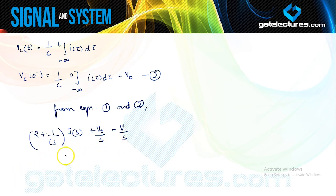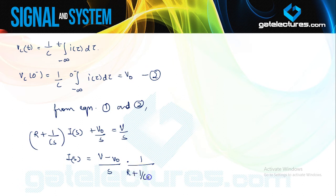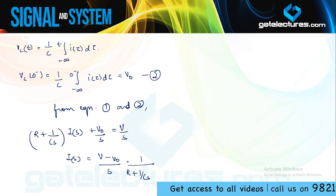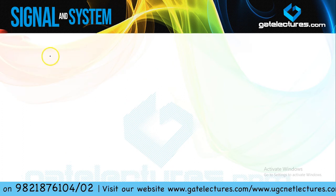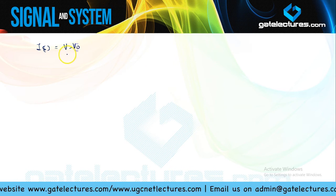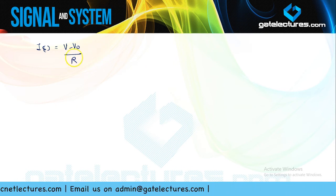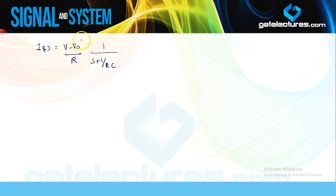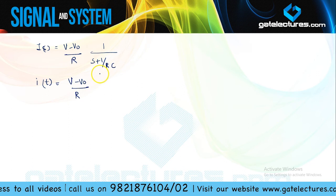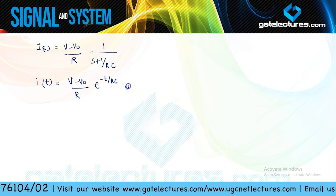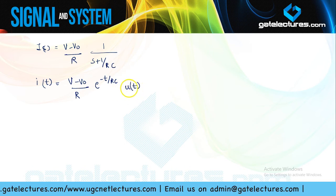Solving for I(s): I(s) = (V − V₀) / [s·(R + 1/(Cs))], which simplifies to I(s) = (V − V₀)/R · 1/(s + 1/(RC)). Taking the inverse Laplace, since this is a unilateral transform, I(t) = [(V − V₀)/R]·e^(−t/RC)·u(t). This is the expression for the current.